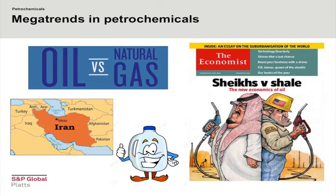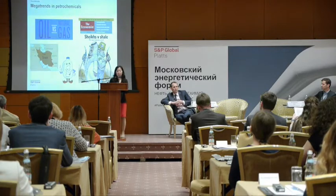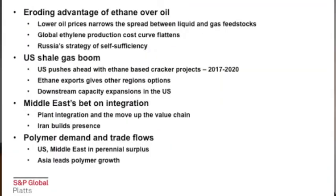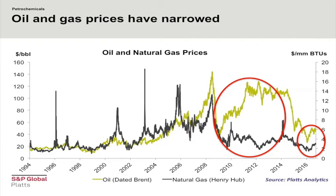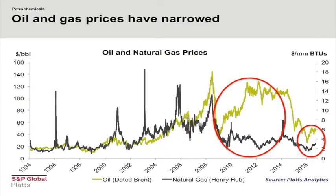The feedstock picture has changed in the past few years with plummeting oil prices. Looking at developments in crude oil and natural gas: the biggest influence on petrochemical prices globally is crude as a key feedstock to petrochemicals. However, 40% of petrochemicals are made from alternative feedstocks, and most of that comes from the natural gas stream. The chart here shows the price of crude against the price of natural gas.